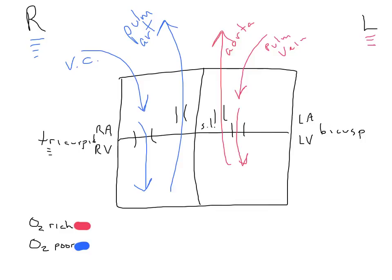To summarize: the atria receive blood and the ventricles send blood. The path is always atrium, ventricle, then pumped out. The left side carries oxygen-rich blood that has just come from the lungs, and pumps it to nourish all the body cells. The right side carries oxygen-poor blood returning from the body tissues — depleted of oxygen and carrying carbon dioxide — which is then pumped through the pulmonary artery to the lungs to exchange carbon dioxide for oxygen.